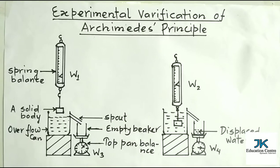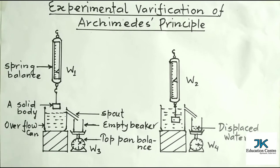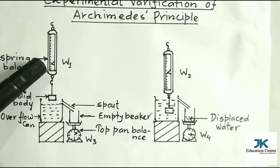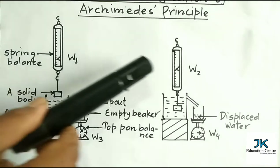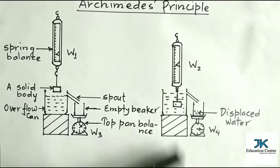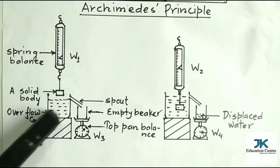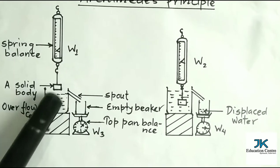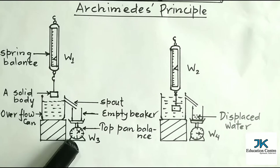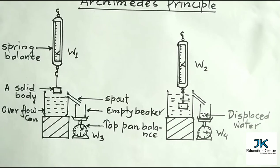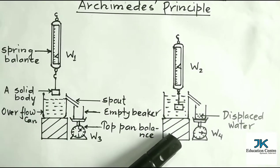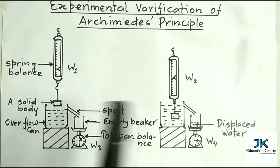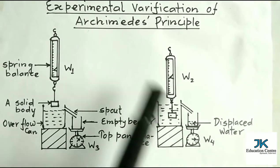Look at this diagram. First, you have to draw this diagram. In this diagram, a body is first weighed in air, and then it is again weighed while submerged in water. On the lower side, an overflow can is completely filled with water up to the spout. An empty beaker is placed just under the spout on a top-pan balance. When the body is immersed into the water, it displaces a certain amount of water. The displaced water goes out through the spout and is collected in the beaker. The combined weight of the displaced water and beaker is then recorded.